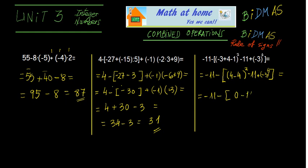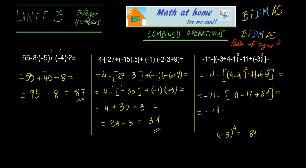So it becomes minus 11 plus, and then minus 3 to the power of 4. You should know — and revise powers if needed — that when you have a negative base and an even exponent, the solution is positive. So this equals positive 81. That gives us 80. Finally we solve the square bracket, which is positive 70. So the final solution is minus 11 minus 70, which equals negative 81.